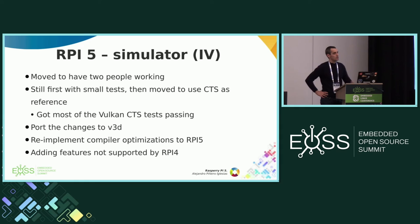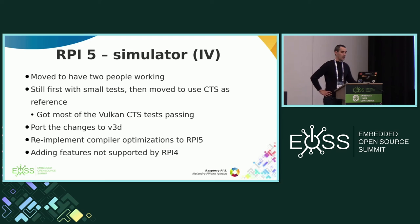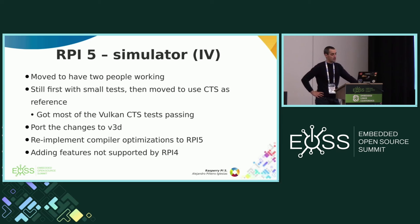When we had a good bunch of CTS tests working with the simulator, we ported all those changes to OpenGL. That was not a lot of work, because in my opinion the most complex part was working on the compiler — and the compiler is common for both the Vulkan and the OpenGL driver. After that, we re-implemented the compiler optimizations that we had disabled, making them work correctly with Raspberry Pi 5.